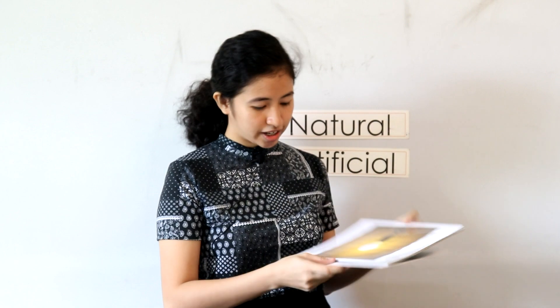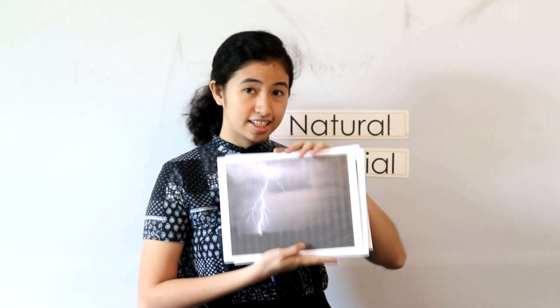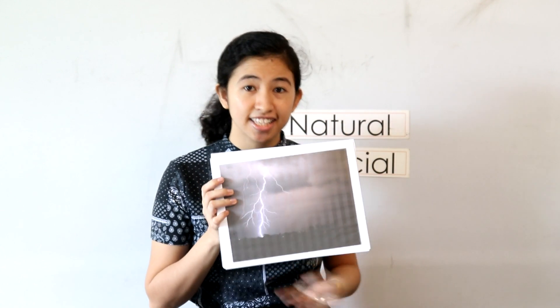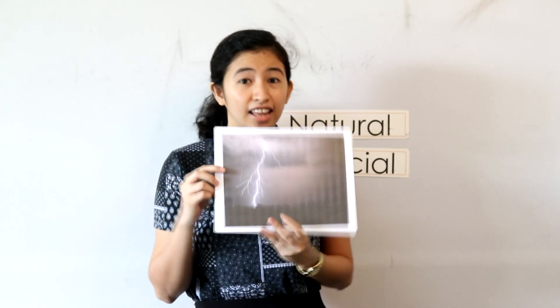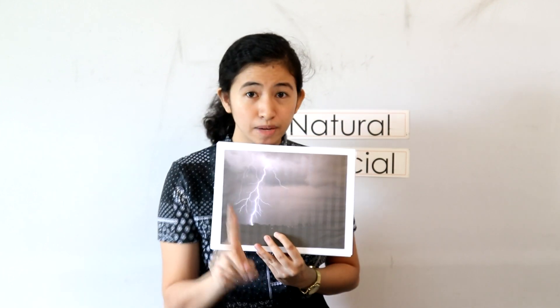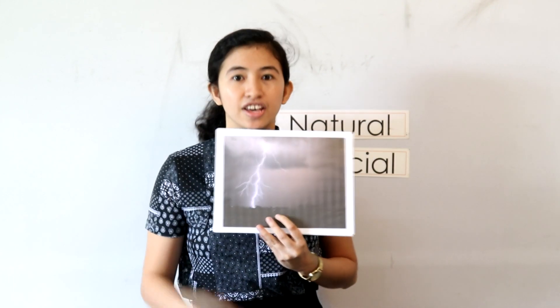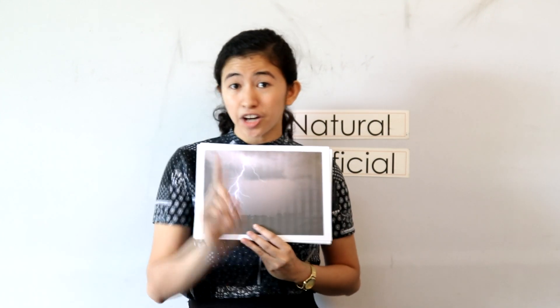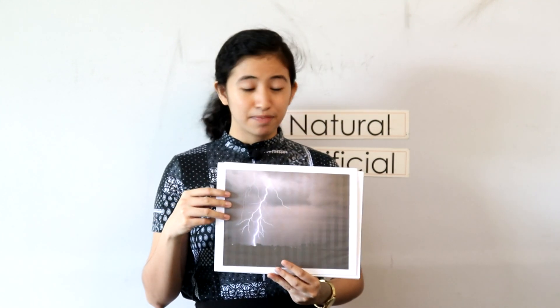What is this? This is lightning. When can we see lightning? When there is a storm, and it is sometimes accompanied by thunder. It is made by God.